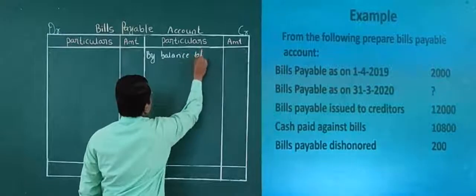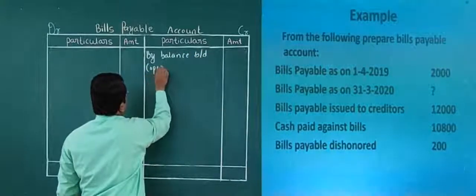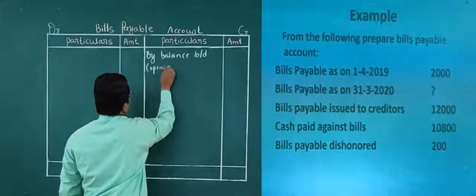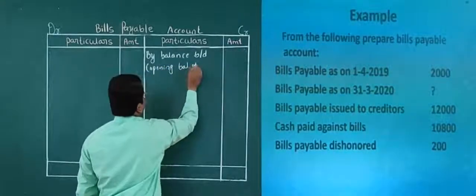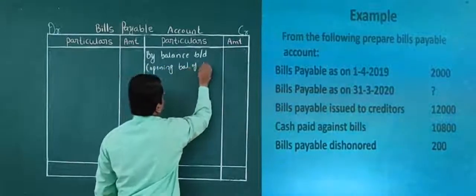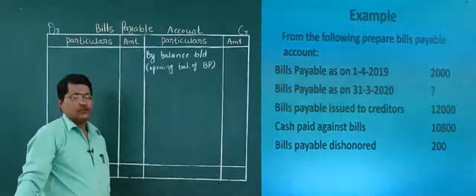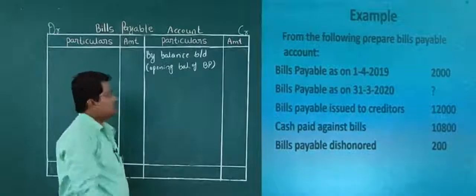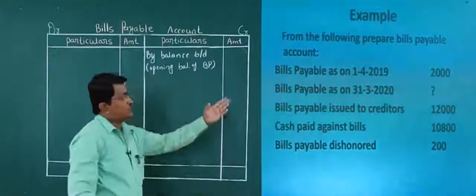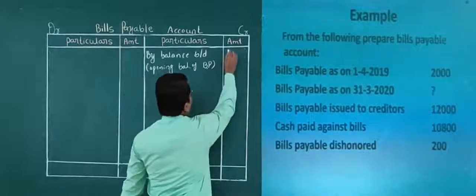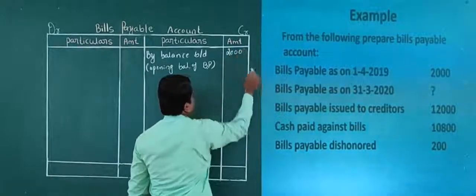Balance brought down — that is the opening balance of bills payable. What is the opening balance here? Yes, it is 2000. So I will write here rupees 2000.